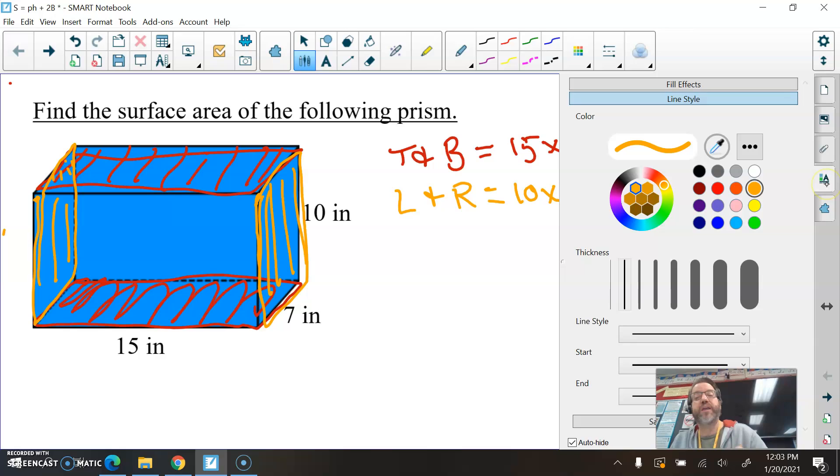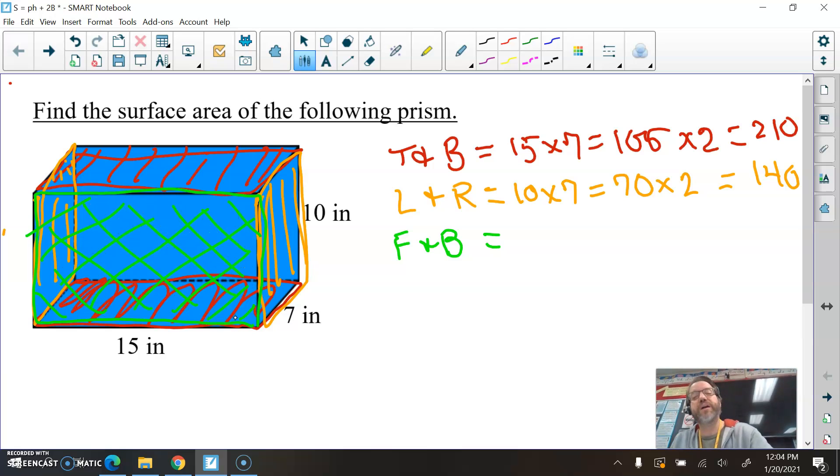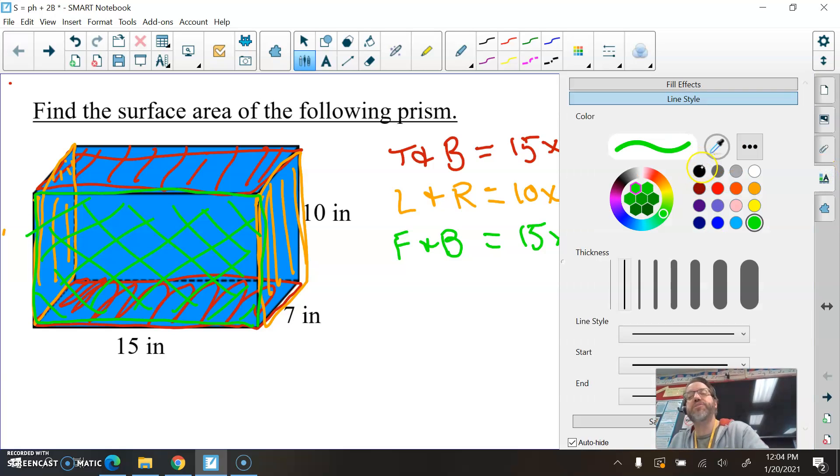And then I need to switch colors one more time. I think this time I'll go with this little lime green color. So we have the front and the back are the only two sides that we haven't found yet. The front here is 15 inches. I'll trace it. This is 15 inches. By 10 inches, its height is 10 inches. So I'll shade this in here so you can see the front here. That's 15 by 10. Multiply that, you get 150. That's the area of the front face. The back is identical, so I can double that. I can multiply by 2. And I get 300.